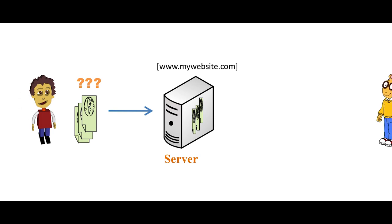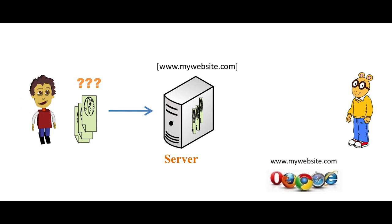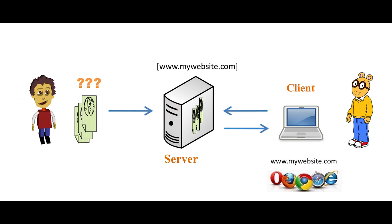Now, a person sitting a thousand miles away from you wants to access your content. He will simply request the content by typing the address of your website, that is the domain name, in the browser using his laptop, mobile phone, tablet, or any other similar device. The request will be sent to the server, the server will locate the content, and then render back the content to the person who requested it in his browser. And that is how websites work.